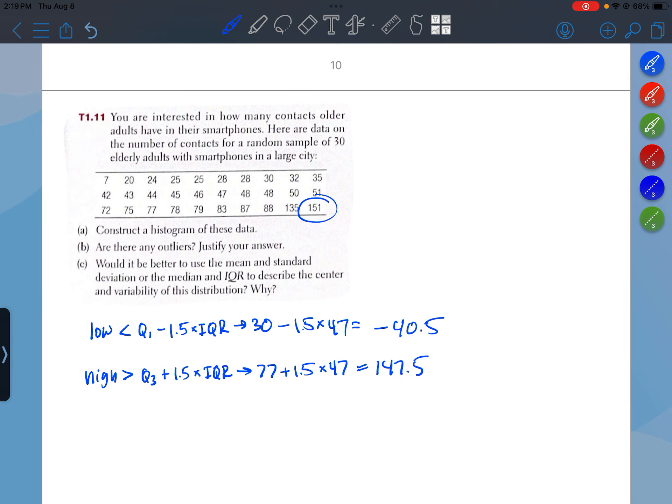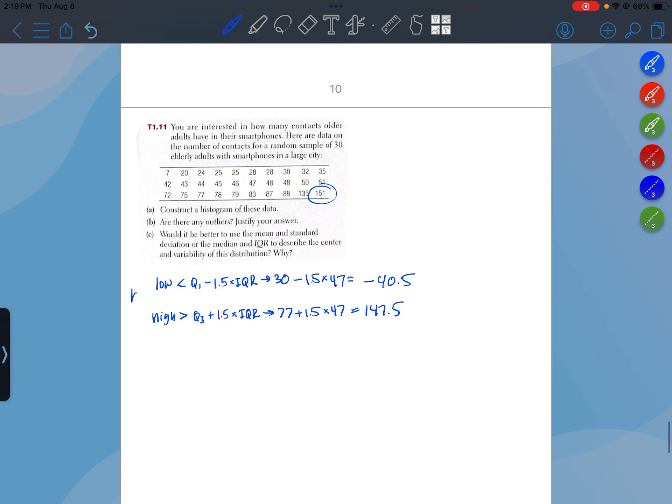Alright, so for part B based on these calculations we could say the elderly person that has 151 contacts is a high outlier. They have an unusually high number of contacts compared to the other people in this sample.